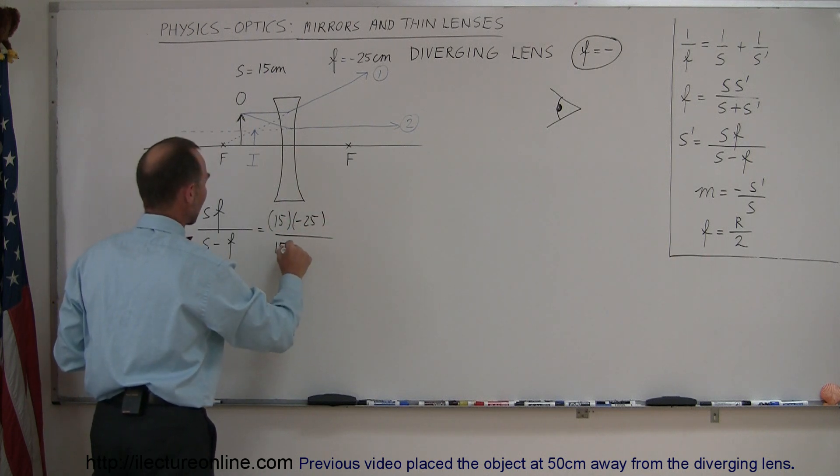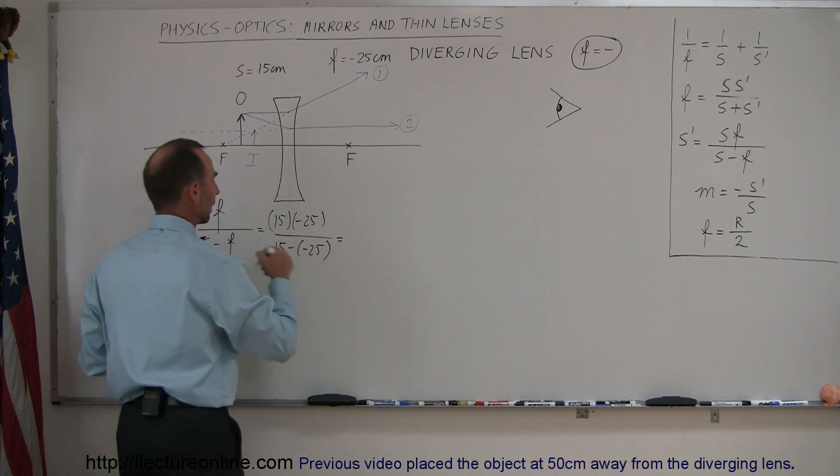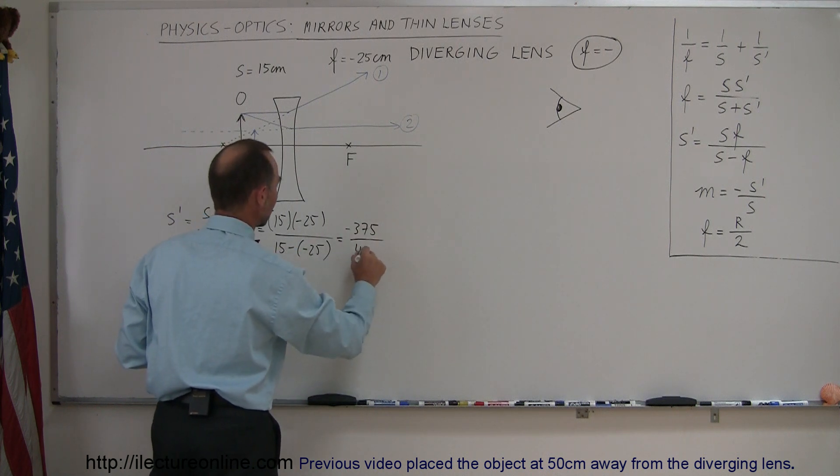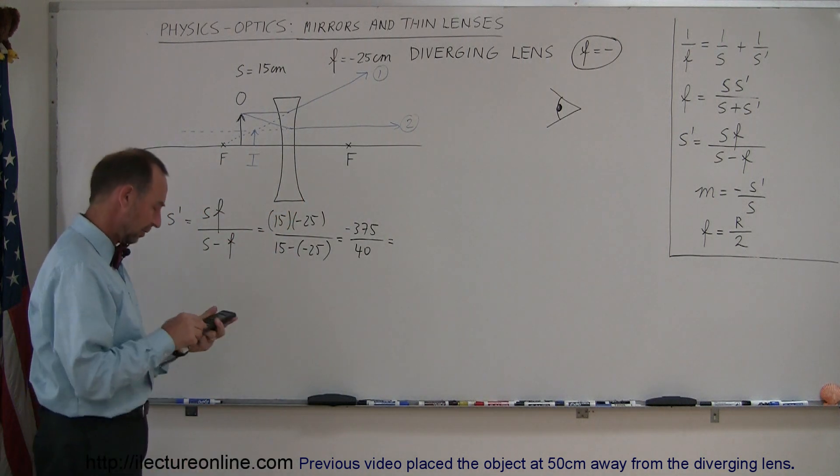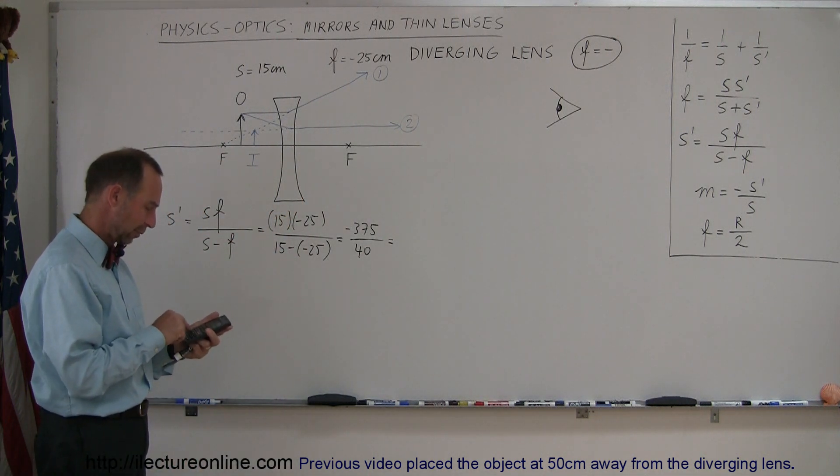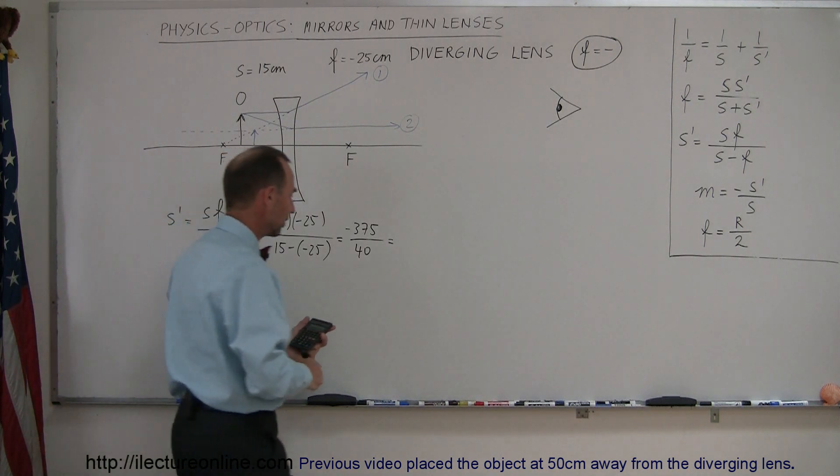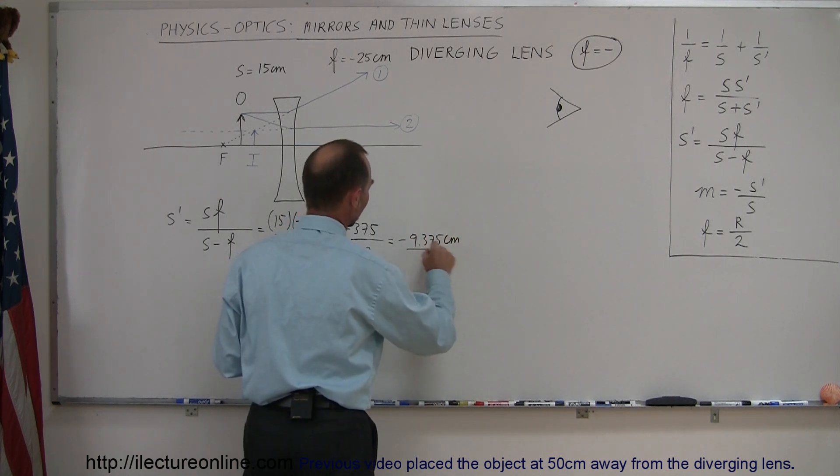the focal length was minus 25, divided by 15 minus a minus 25. And so this is equal to, that looks like minus 375, divided by minus times the minus is plus, that would be 40. And, see here, 375 divided by 40, it's 9 and 3 eighths, 9.375. So minus 9.375 centimeters.